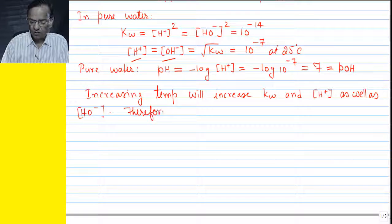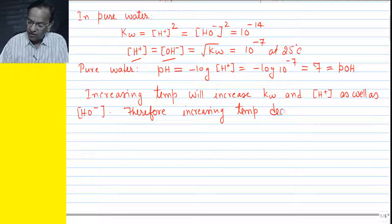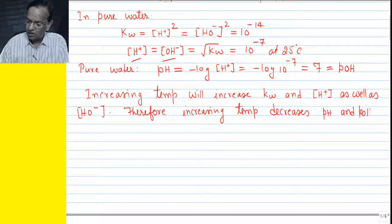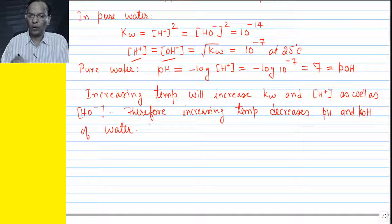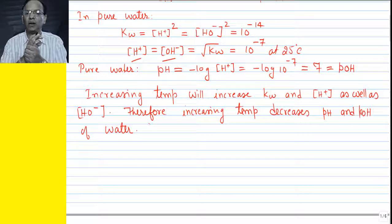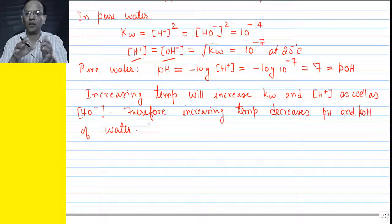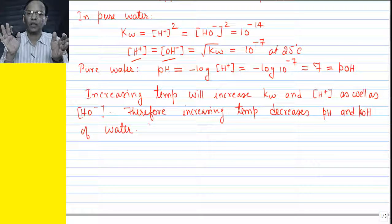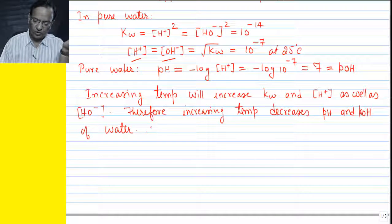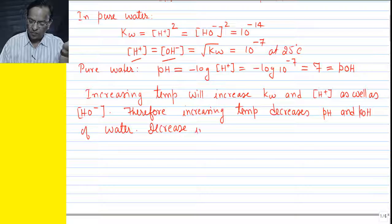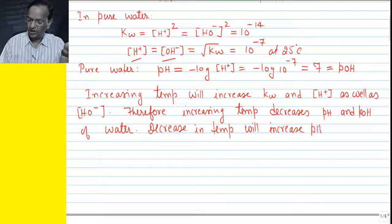Therefore, increasing temperature decreases pH and pOH of water, because [H⁺] and pH are inversely related, and [OH⁻] and pOH are inversely related. If [H⁺] concentration increases, pH will decrease; if [OH⁻] concentration increases, pOH will decrease. The reverse is true for a decrease in temperature — decreasing temperature will increase pH and pOH of water.